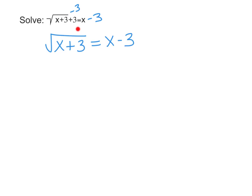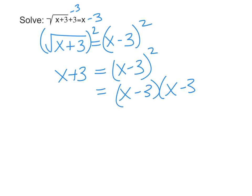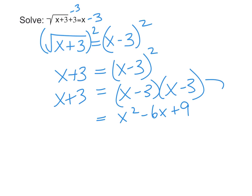Our next step is to get rid of the radical by squaring both sides. That leaves us with x plus 3 on the left — cancelling the radical — and x minus 3 squared on the right. Expanding x minus 3 squared using FOIL gives us x squared minus 6x plus 9.